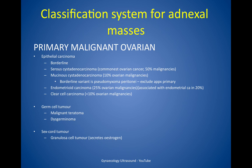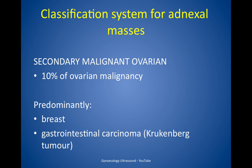Within the group of epithelial carcinoma there is borderline, serous cyst adenocarcinoma, mucinous cyst adenocarcinoma, endometrioid carcinoma and clear cell carcinoma. Amongst germ cell tumours we include malignant teratoma and dysgerminoma, and sex cord tumour would include granulosa cell tumour. Secondary malignant ovarian masses are around 10% of all ovarian malignancies and predominantly are from breast or gastrointestinal carcinoma, also called Krukenberg tumour.